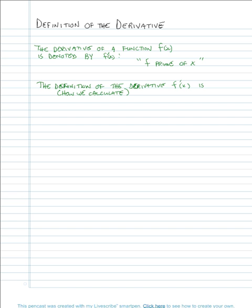The derivative is actually a limit. f prime of x is equal to the limit of the fraction: the numerator is f of x plus h minus f of x, all divided by h, as h approaches 0. You can see immediately that's something we can't calculate quickly in most cases because substituting h = 0 would make the denominator zero.